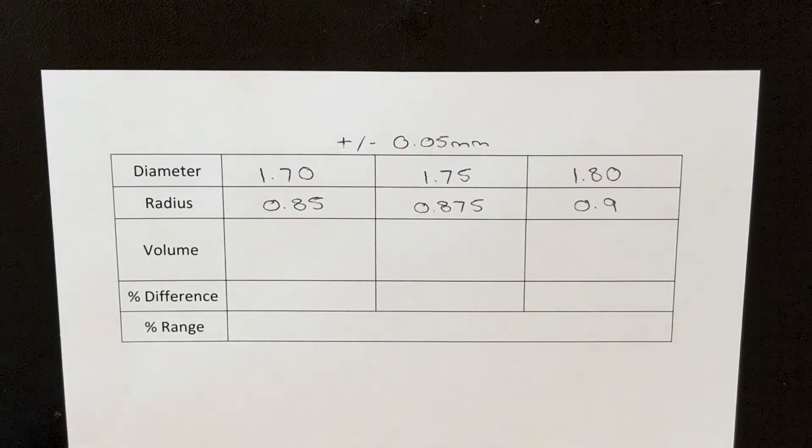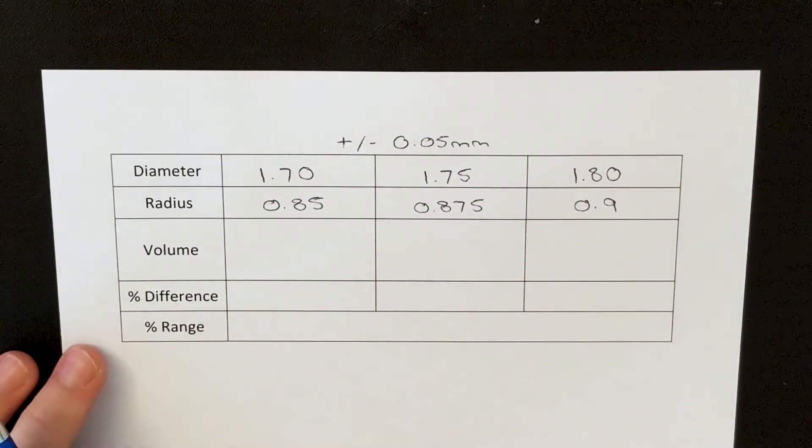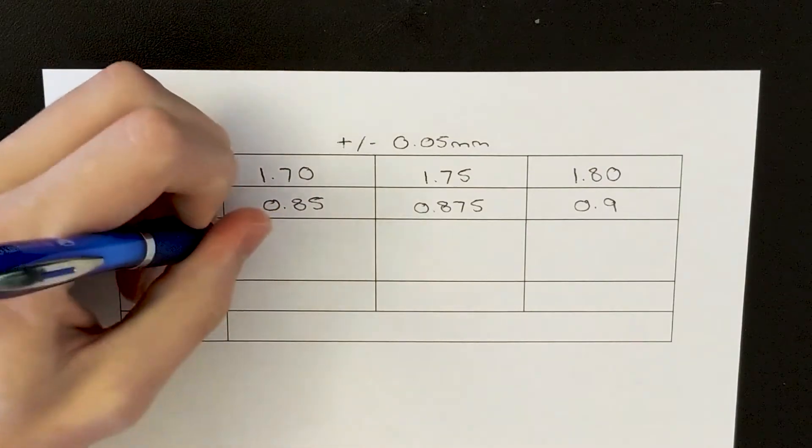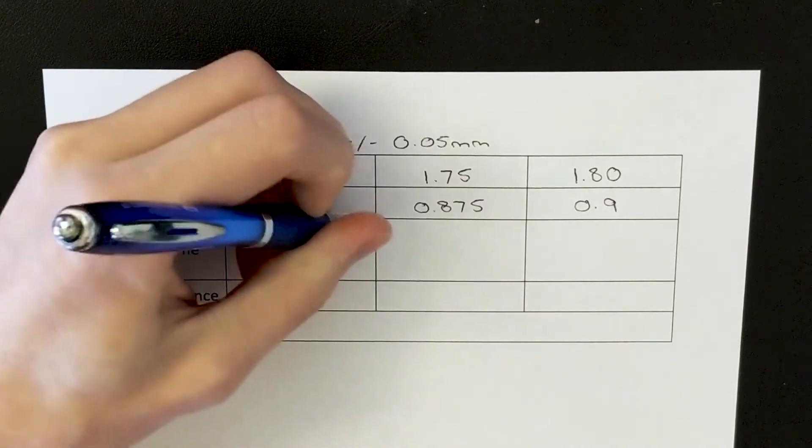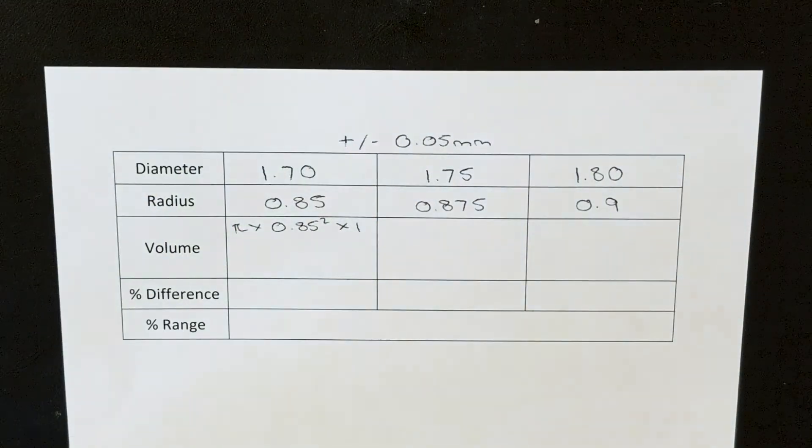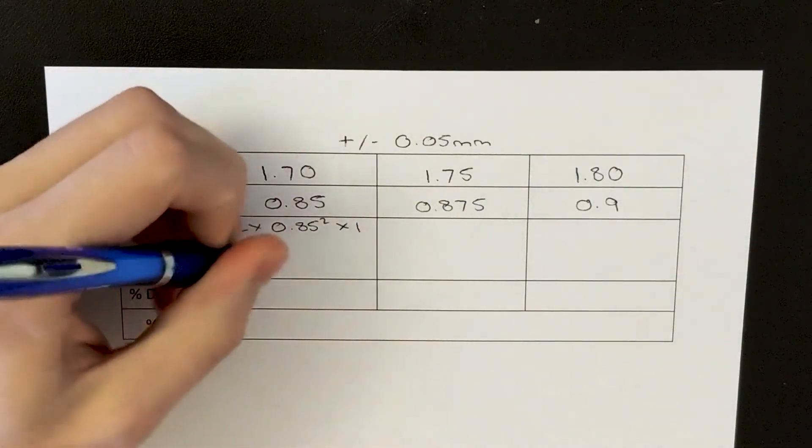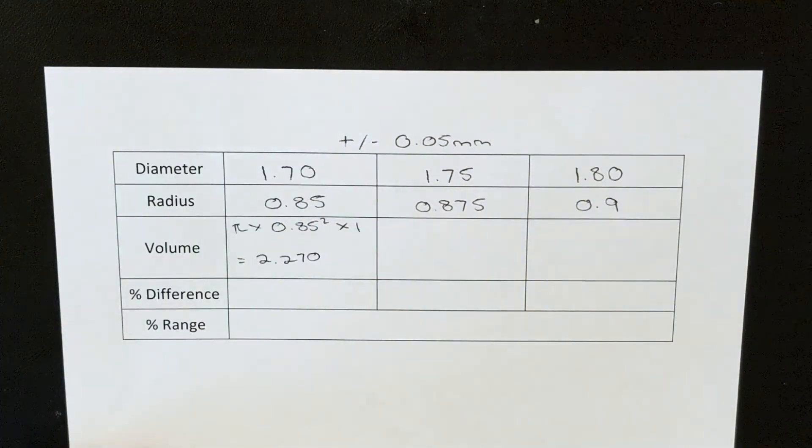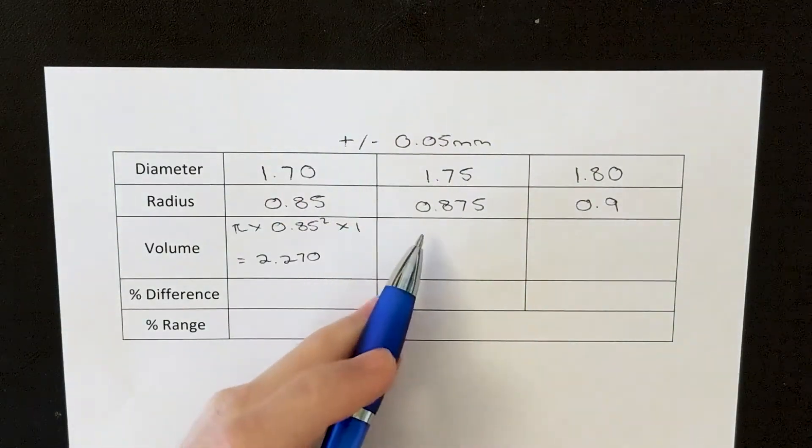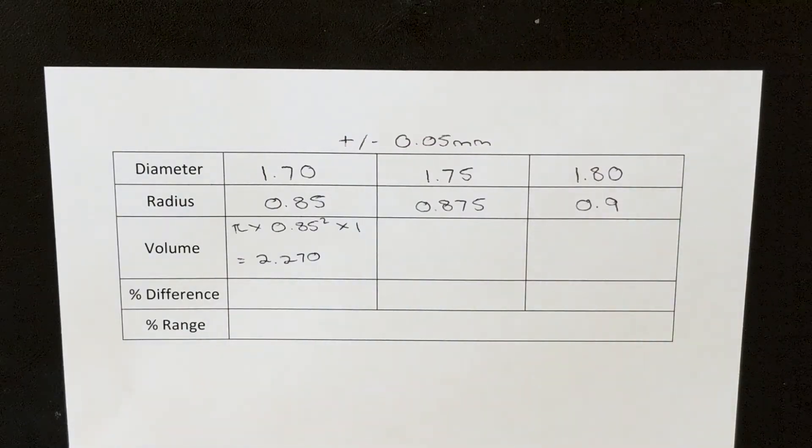So we'll start with the formula for the volume of a cylinder, which is pi times the radius, which is 0.85 squared times the length. And that equates to 2.270mm³. Now I'm going to do the same thing for 1.75 and 1.8mm filament.